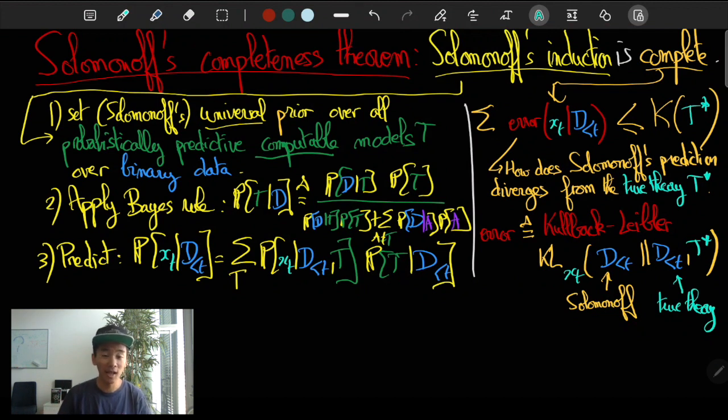Solomonoff's completeness theorem says that if you add up all the errors that the Solomonoff demon is going to make over all of its lifetime, if you take the expectation of this, because we still assume that the data is a bit random, even the true theory we assume is not complete, it is not predicting with probability one, it is still probabilistic, and if you assume this...